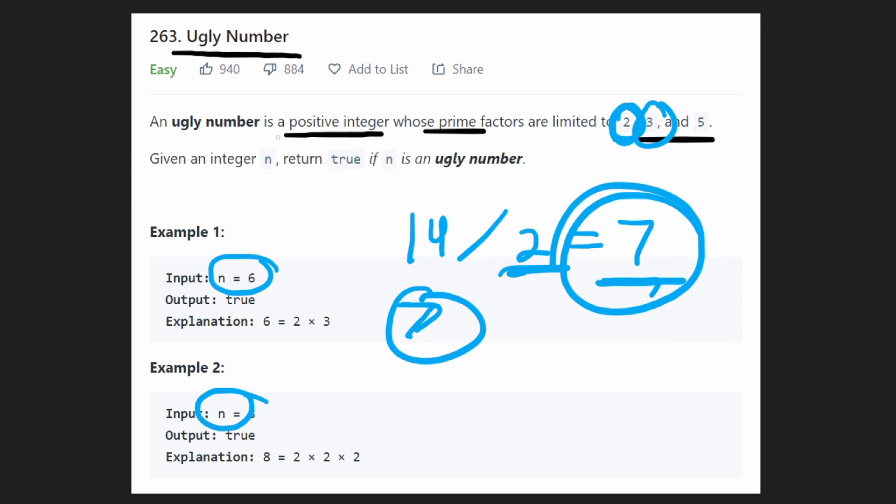Oh, and one last thing. In the input, they say an ugly number is a positive integer. And it could be that n might be negative, right? n might be less than or equal to 0. If that's true, then immediately we'll return false because that means it's not an ugly number.